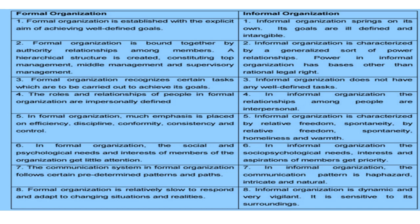There are two types of organization: formal and informal. Formal organizations are established with the aim of achieving well-defined goals. Informal organizations focus on ill-defined and intangible goals. Formal organizations have a hierarchy of management, while informal organizations are characterized by informal relationships and focus on interpersonal relationship building. Formal organizations have a well-defined goal and carry out tasks to achieve it.